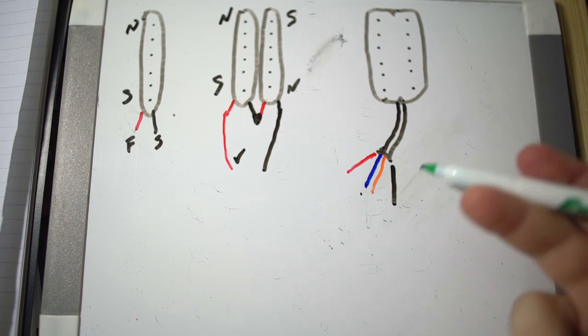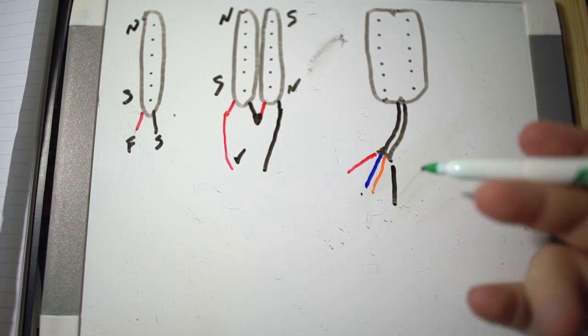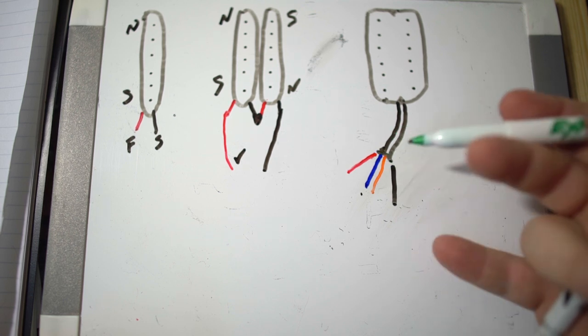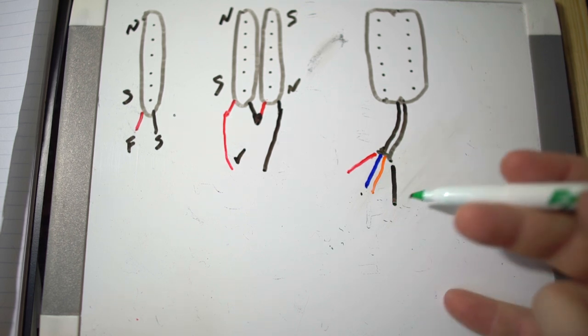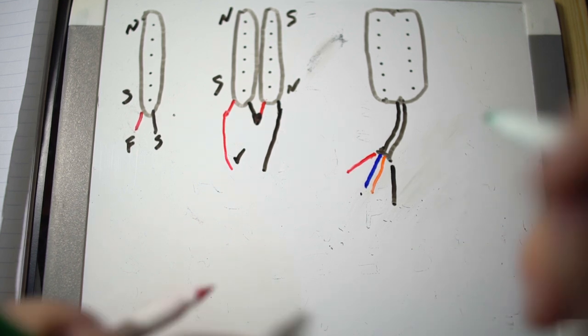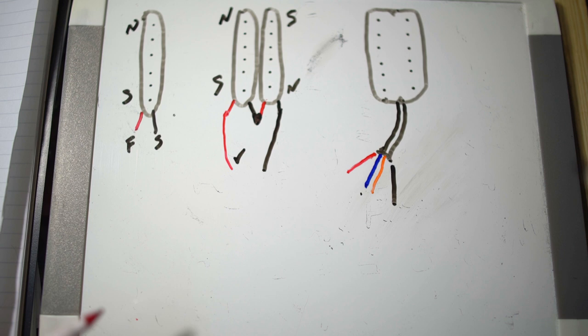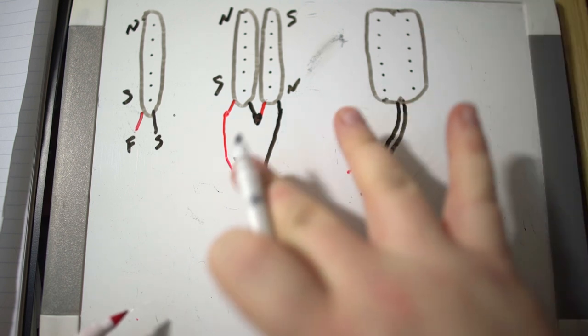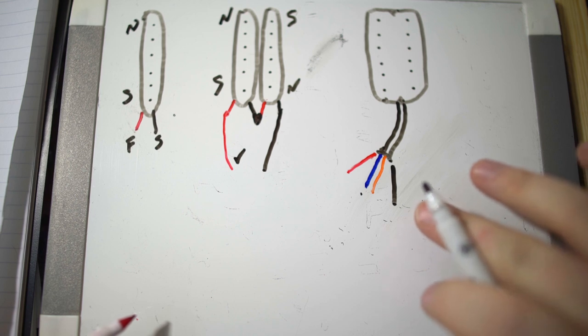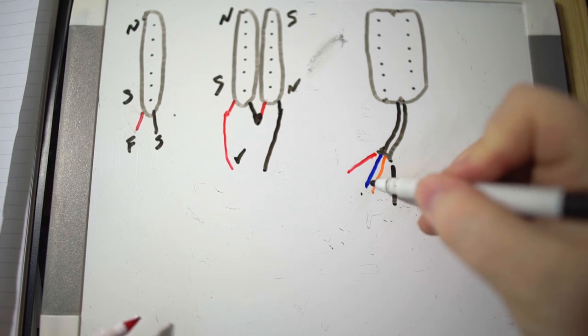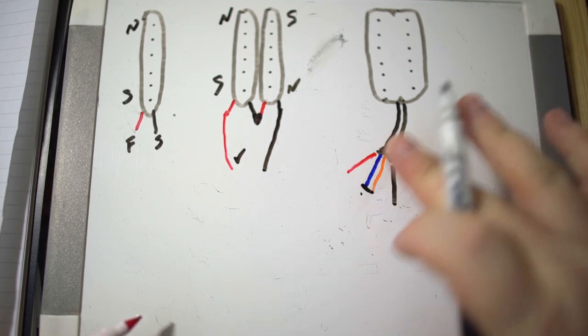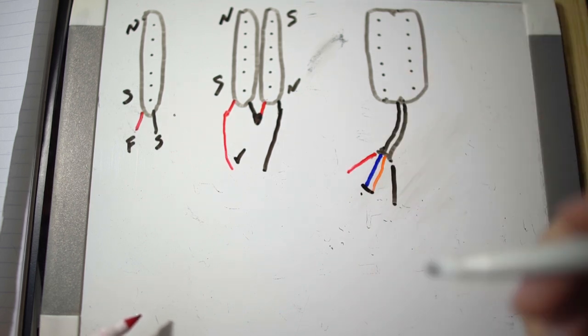Your pickup should have some literature with it that shows what should be connected. The reason they give you access to four of these is so that you can coil tap if you want to make your humbucker tap to a single or if you want to do other trick wiring. But if you're just replacing your pickups and you want it stock, then all you need to do is wire these together and then you have a two-lead pickup.